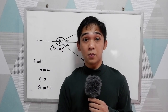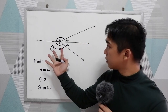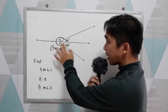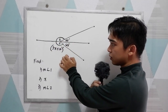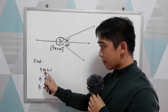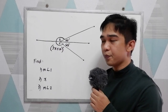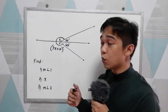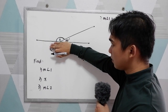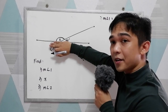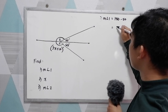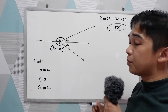Now let us solve some problems regarding linear pair and supplementary angles. We have a diagram with a straight line, angle 1, and angle 2. The given values are 50 degrees, 65 degrees, and angle 2 measures 3x plus 10 degrees. We're going to find the measure of angle 1, x, and the measure of angle 2. For angle 1: angle 1 and the given 50 degrees form a linear pair, so we subtract 50 from 180. 180 minus 50 equals 130 degrees. The measure of angle 1 is 130 degrees.